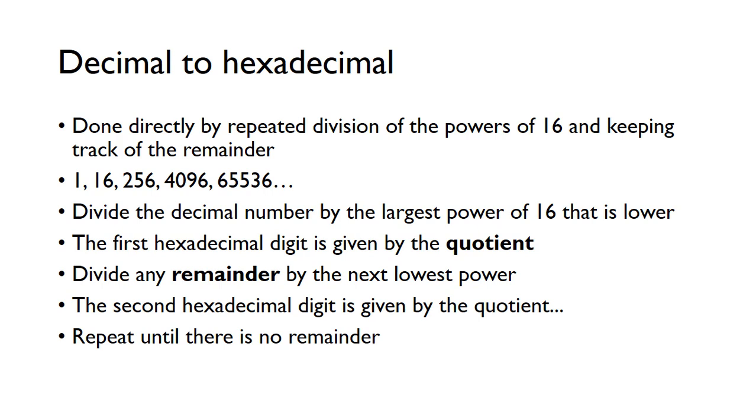So you just divide the decimal number by the largest power of 16 that's lower than the actual number itself, and then the first hexadecimal digit is just given by the quotient, and then you divide any remainder by the next lowest power, and then the second hexadecimal digit is given by the quotient, and so on, and just keep repeating this until we're not getting any remainders left.